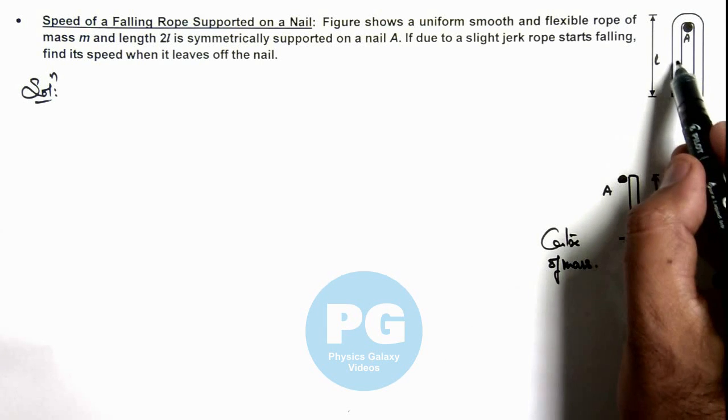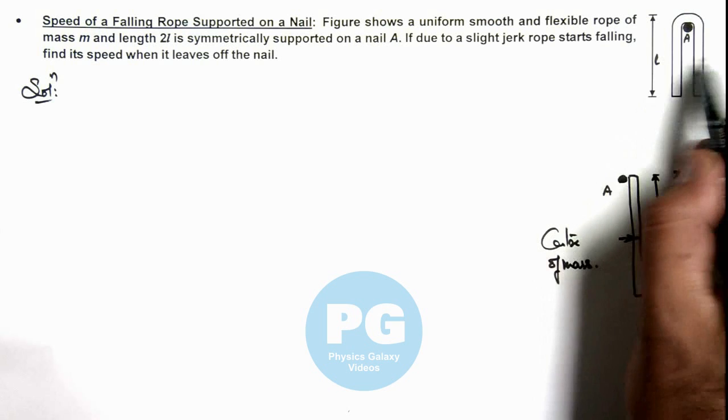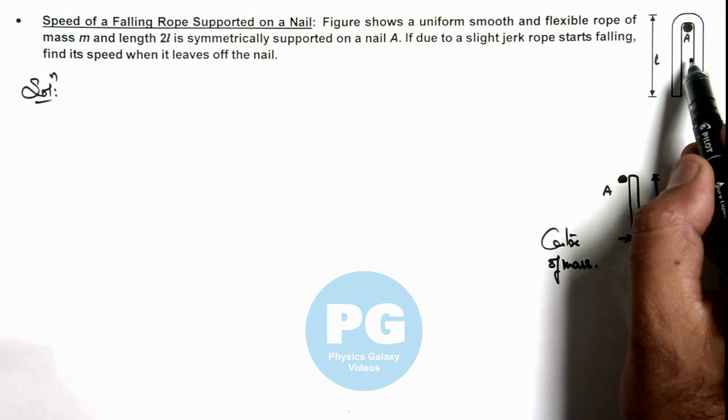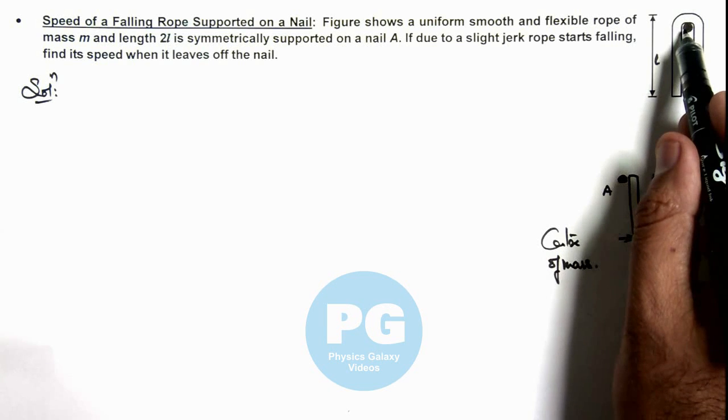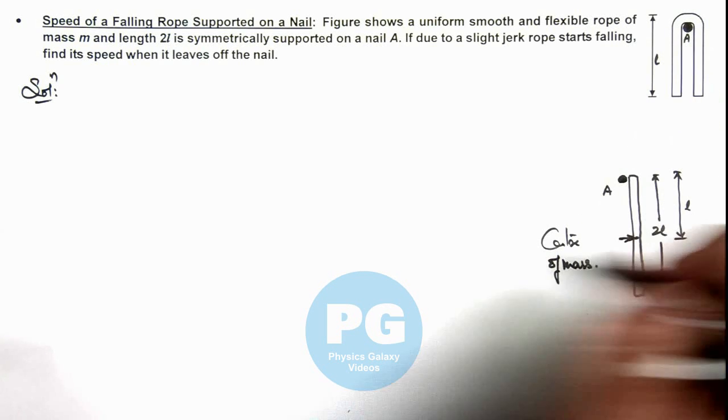Earlier, the center of mass of the rope would be at the midpoint as the rope is uniform, and the center of mass is at a depth l/2 from the nail A. So we can see,